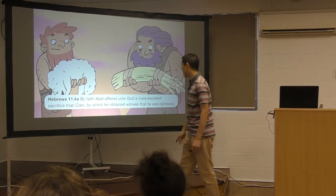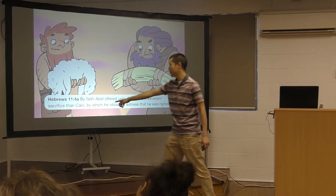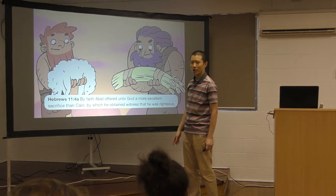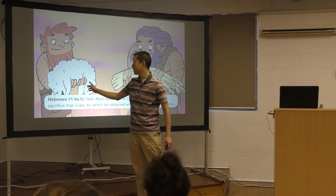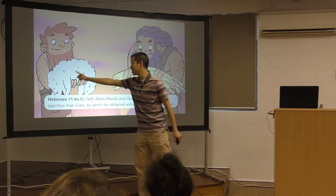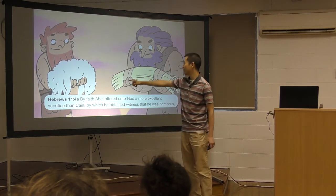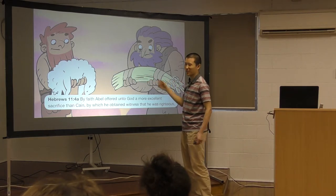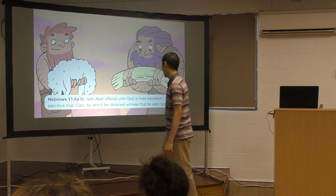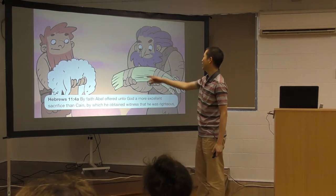By faith, Abel offered unto God a more excellent sacrifice than Cain, by which he obtained witness that he was righteous. So this is Abel here. He offered an animal, because God likes animal sacrifices. That represents Jesus. And here, he offered the fruit of his work. That represents our own works. This is why Abel was recognized as more righteous, because he had an animal sacrifice.